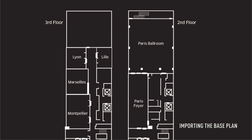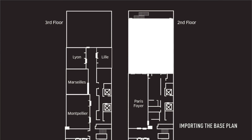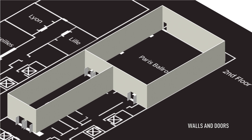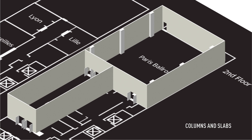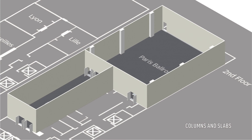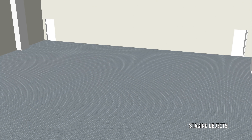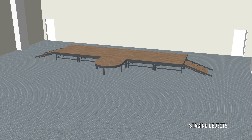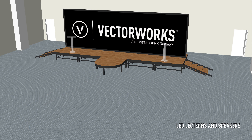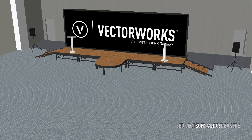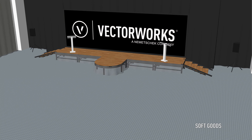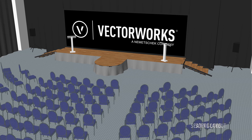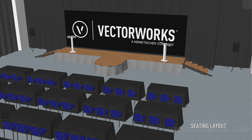Welcome to Entertainment in Vectorworks. This guide will take you through the creation of an event plan, starting with the initial import of a base plan of the venue, to the presentation of your final project. Through the creation of a presentation stage and seating layout, as well as an exhibit booth and area, you will be introduced to many design tools available with Spotlight.